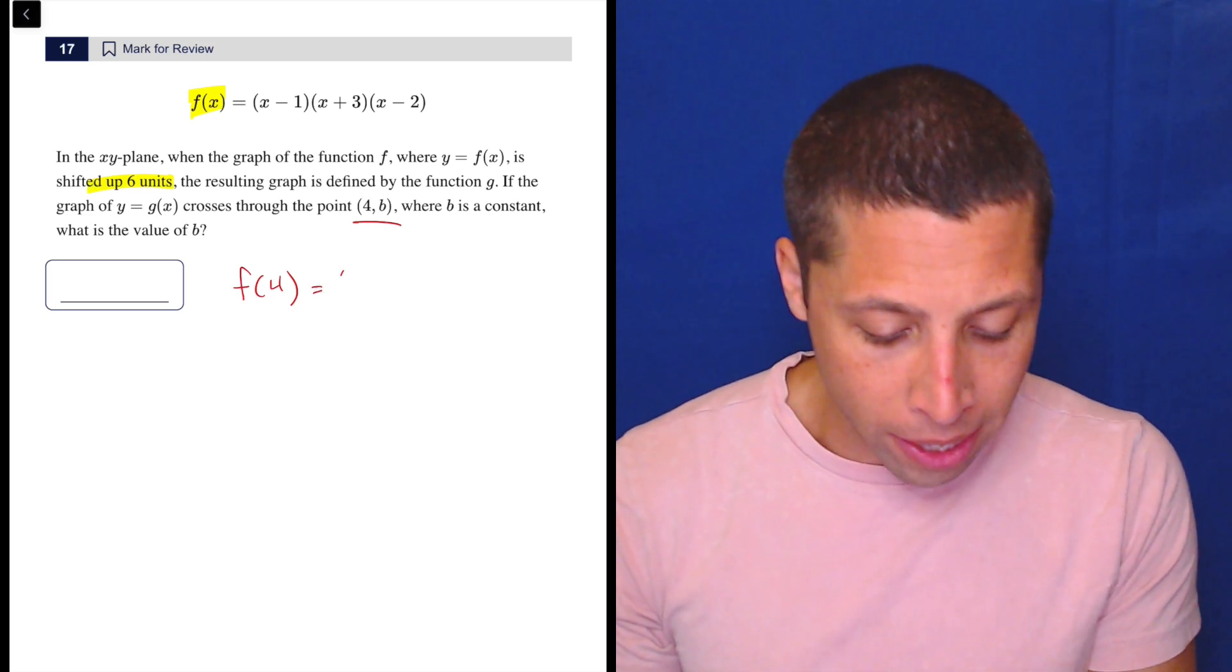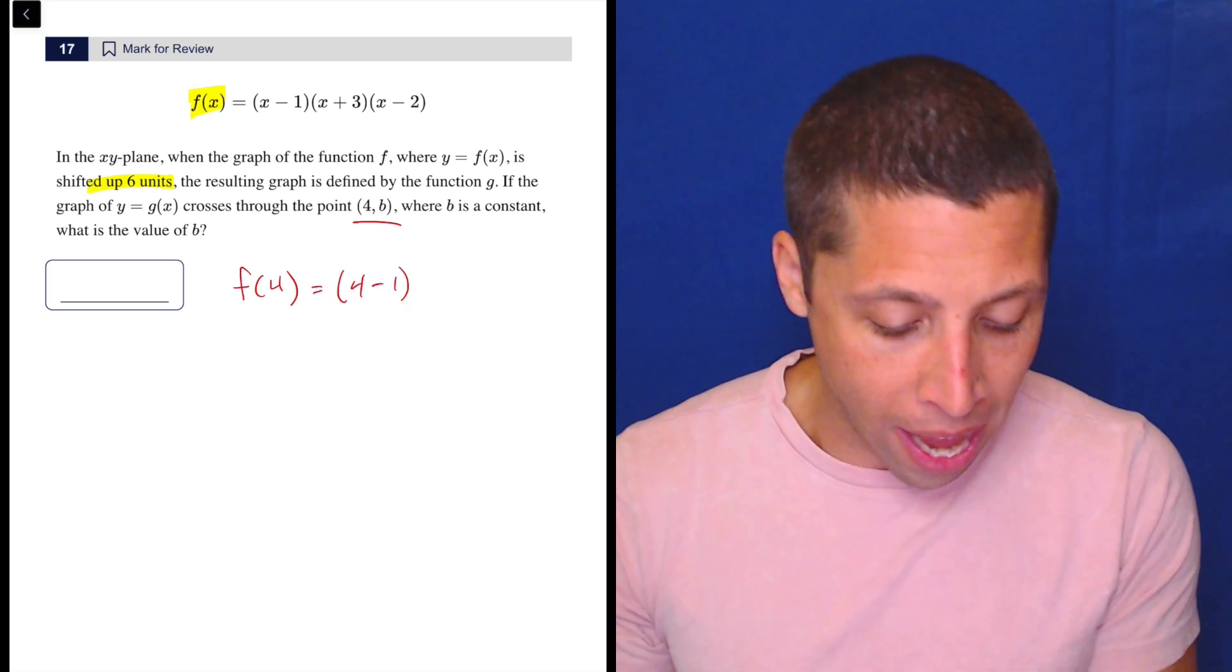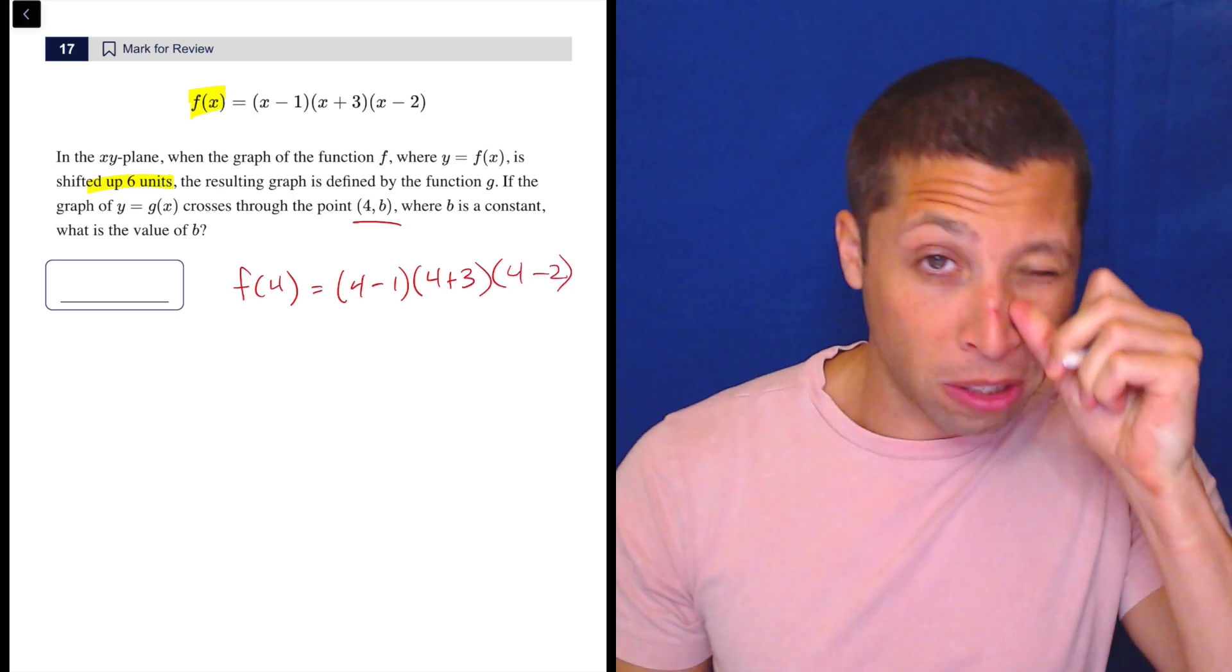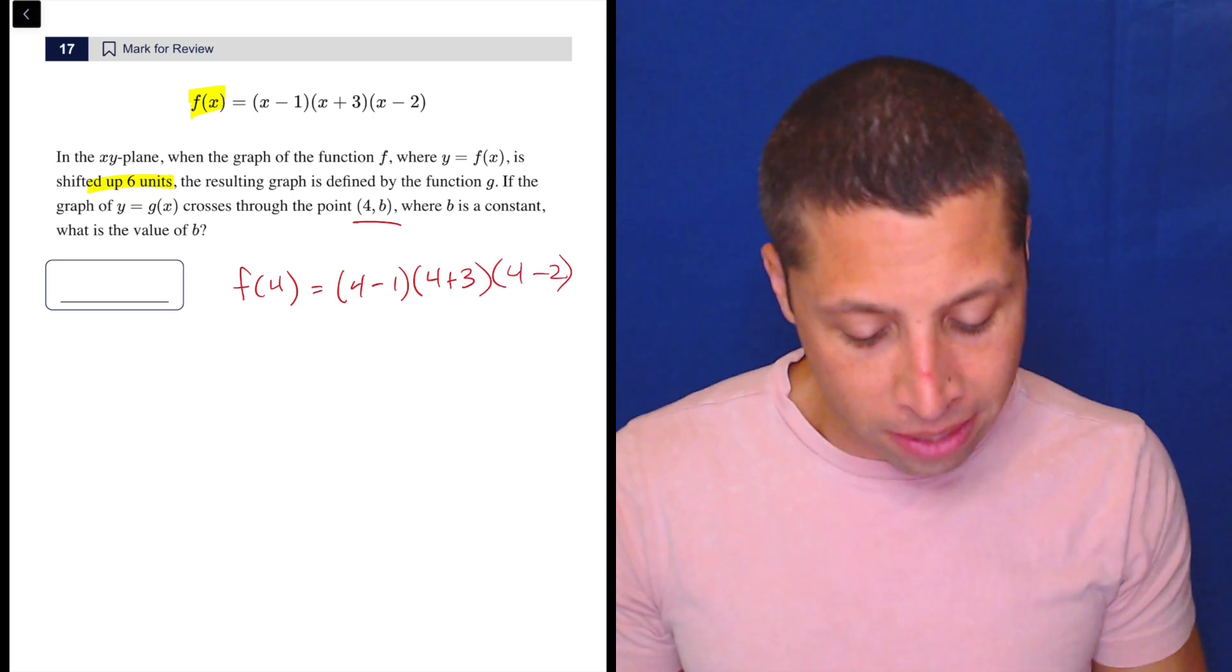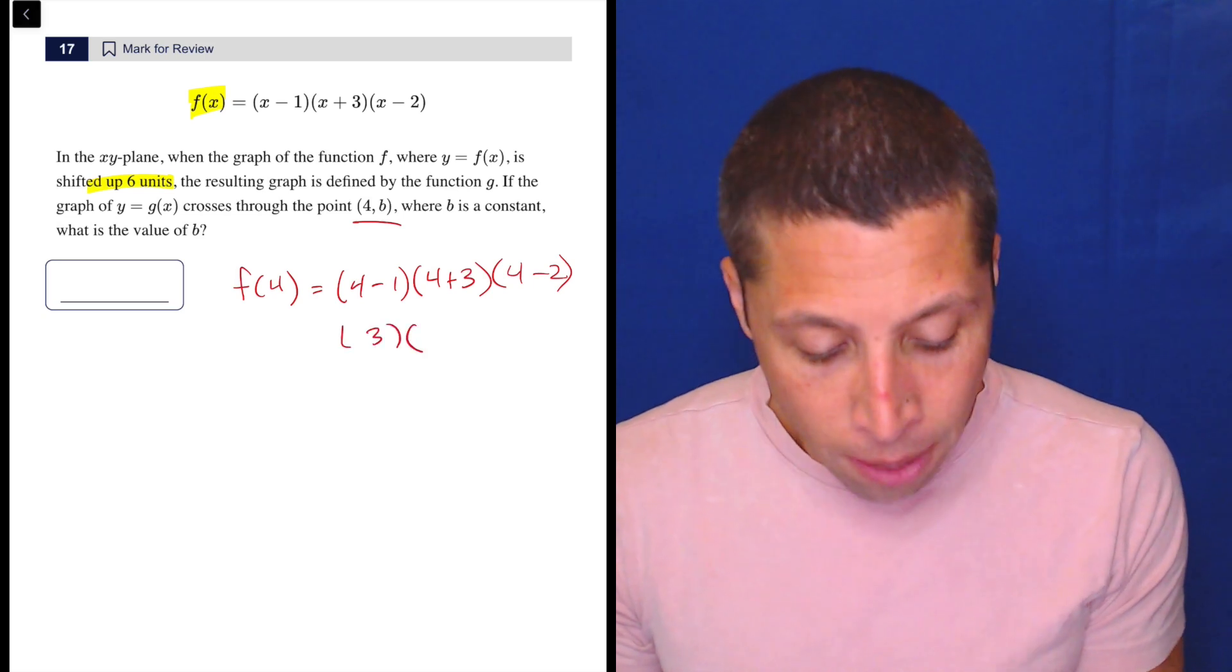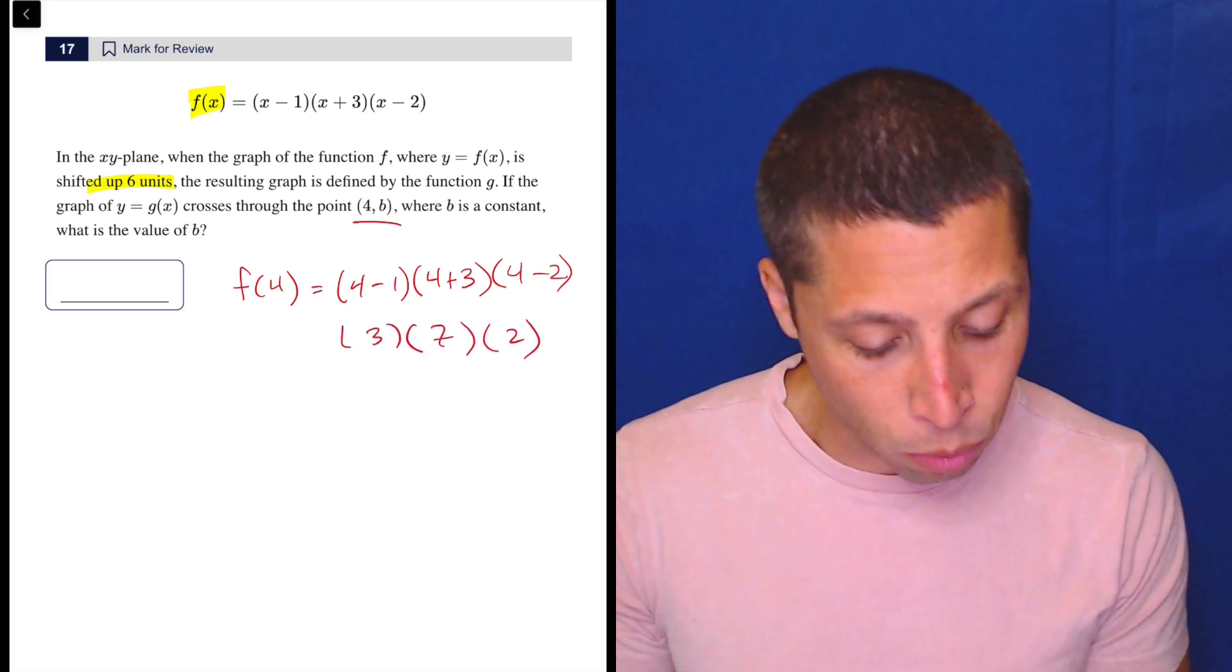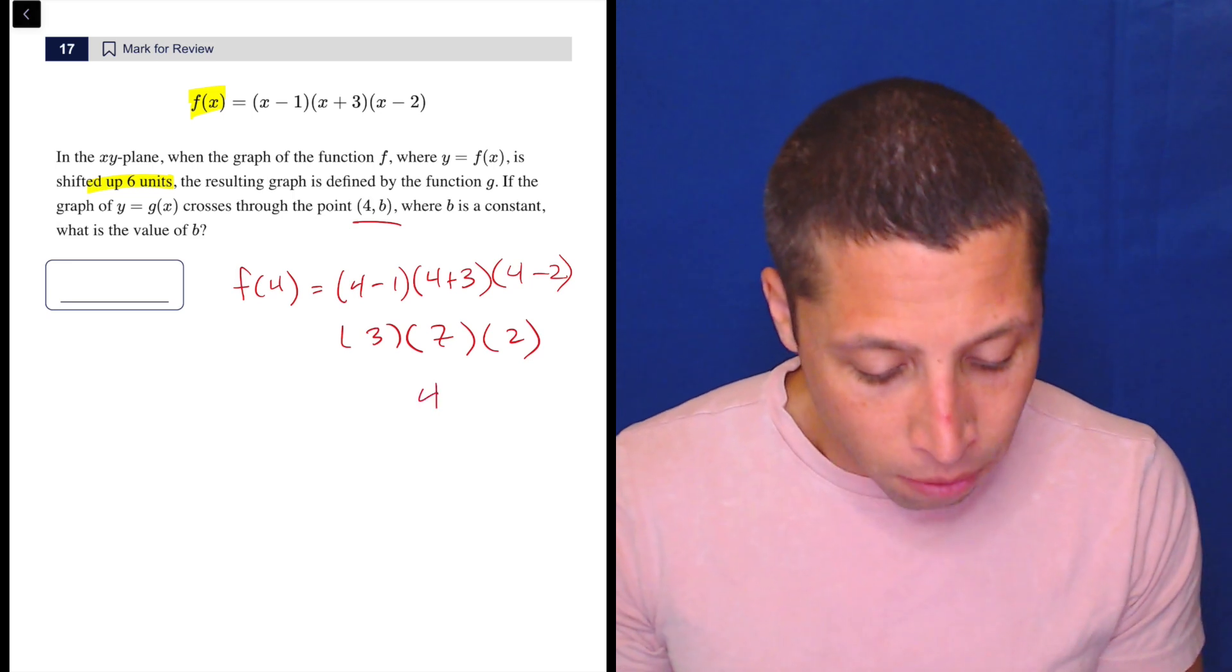All we'd have to do is plug in four for all of the x's. And so some of you might think, oh, this is going to be hard. We've got to foil. There's all this multiplication. No, because once we put a number in, it's easy, right? So this is going to be three times seven times two. Three times seven is 21. 21 times two is 42.